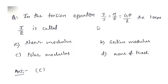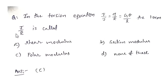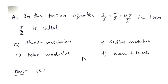In the torsion equation T/J = τ/R = Gθ/L, the term J/R is asked. Rearranging, torque T = τ × J/R. The term J/R is called the polar modulus or polar section modulus. Option C is the right answer.